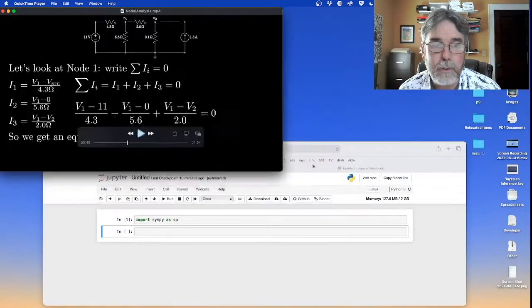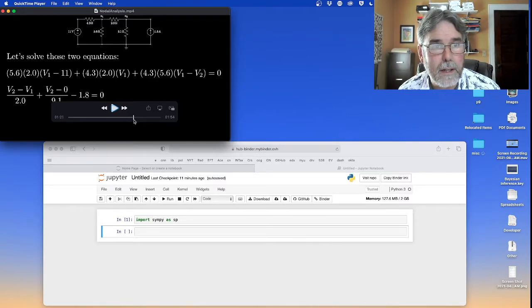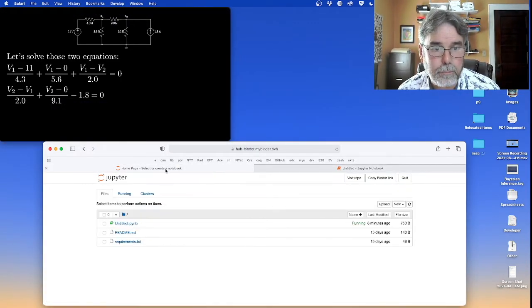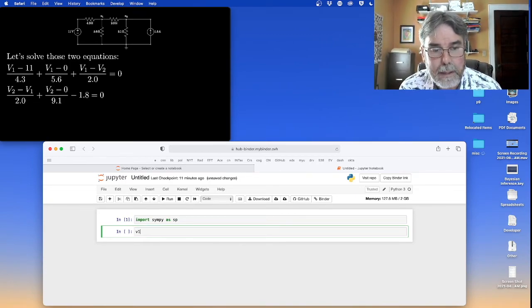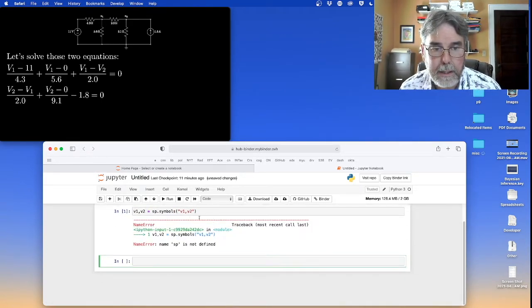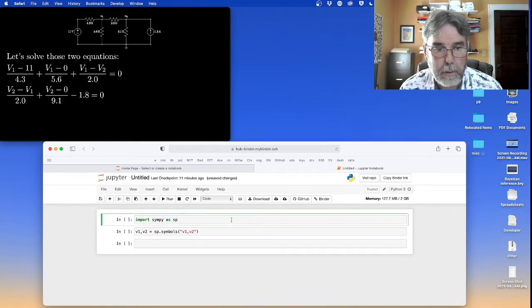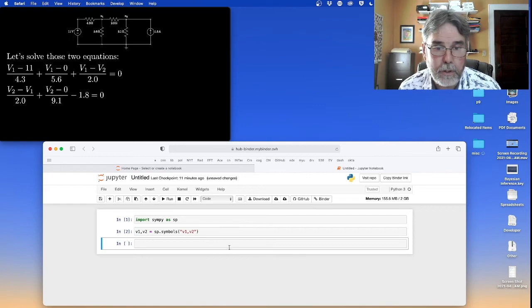What I want to do now is show you how to solve these guys using the computer this time instead of manually by hand, because that's kind of a pain. You could go to the binder that I showed you before. We can simply define v1 and v2 as symbols like so. It looks like I need to restart the kernel here. I'm going to rerun this cell. Okay, that worked.